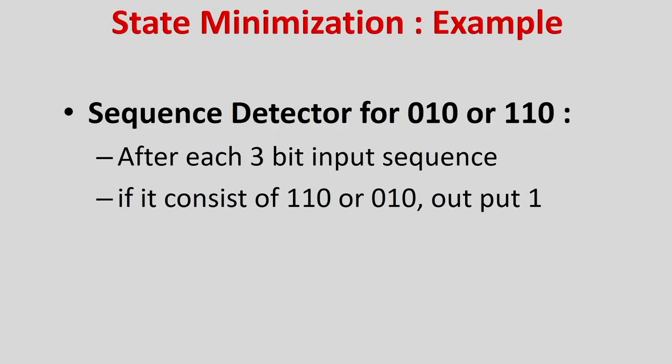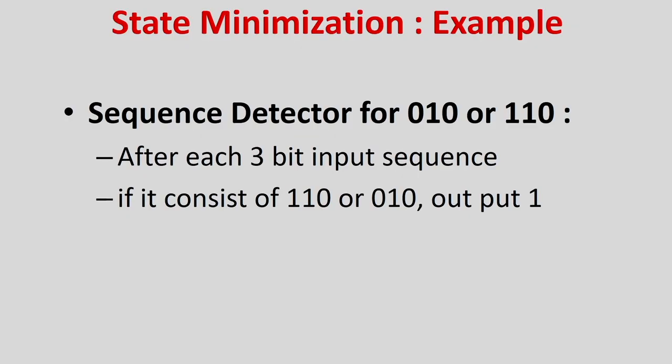What is the row matching method? Let us take an example. We will use two definitions: equivalent states and distinguishable states. For two states S1 and S2, if for some input sequence they produce different outputs, then they are different.